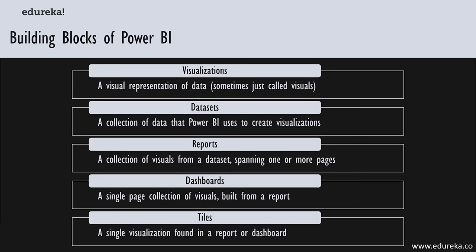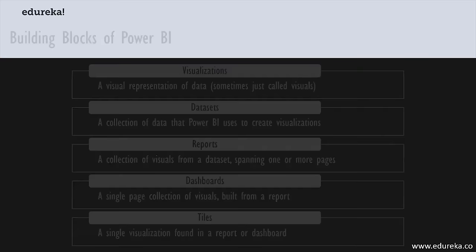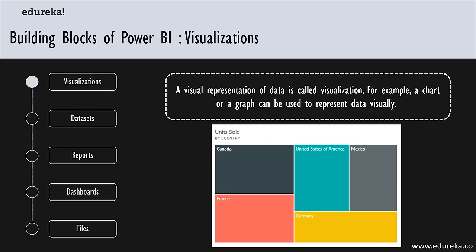Everything you do in Power BI can be broken down into the following building blocks. A good understanding of these building blocks will help you understand concepts and create detailed and complex reports. The basic building blocks are: visualizations, data sets, reports, dashboards, and tiles. First up, a visualization is a visual representation in the form of graphs, charts, and maps of data.